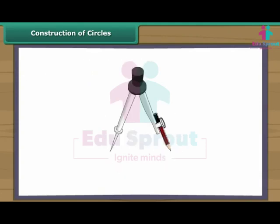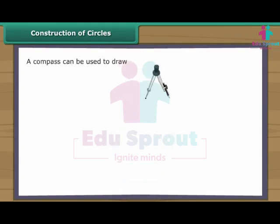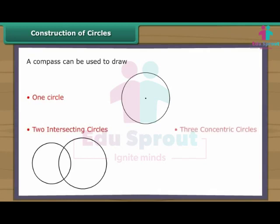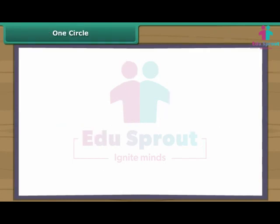We draw circles with the help of a compass. A compass is an instrument with two arms. While one arm remains fixed, the other arm with the pencil moves freely. Let us use a compass to draw one circle, two intersecting circles, and three concentric circles.